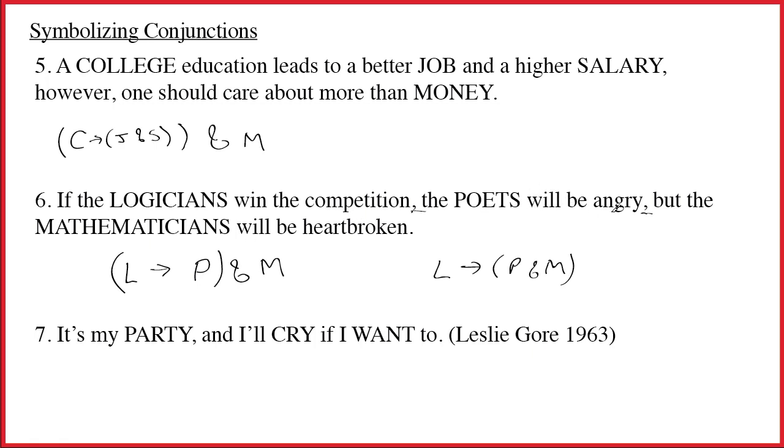If the logicians win the competition, the poets will be angry, but the mathematicians will be heartbroken. Notice, it's obvious that what happens to the poets, their anger is definitely dependent on what the logicians do. And so we want to definitely have P as a consequent of L. But if you think about it, why is it that the mathematicians are going to be heartbroken? Well, it's the same reason. It's a consequent of what the logicians do. So this is definitely the correct symbolization.